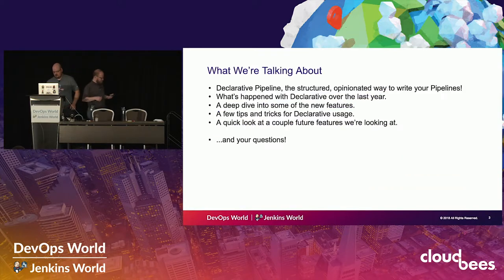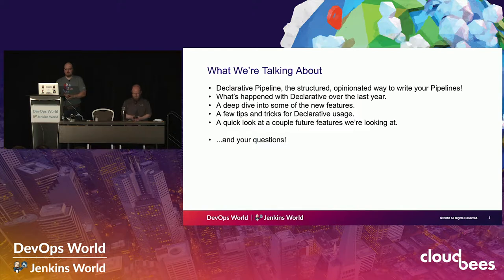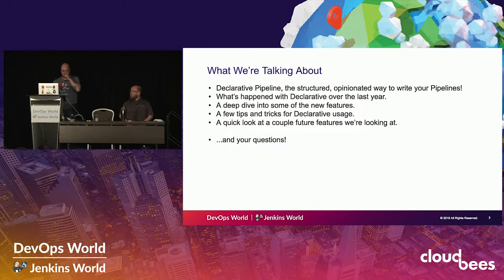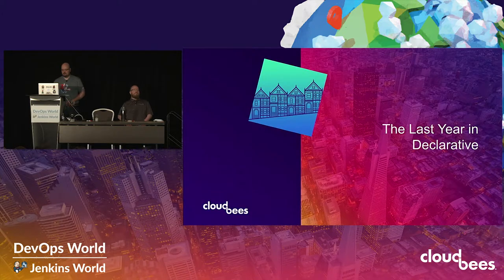So what are we going to talk about? We are going to talk about Declarative Pipeline, which is the structured, opinionated way to write your pipelines - that's the opposite of the scripted pipeline. We're going to mostly go through all the things that happened in Declarative the last year, take a look at some of our new features, hopefully manage to get some tips and tricks in there as well, and look a short while into the future.